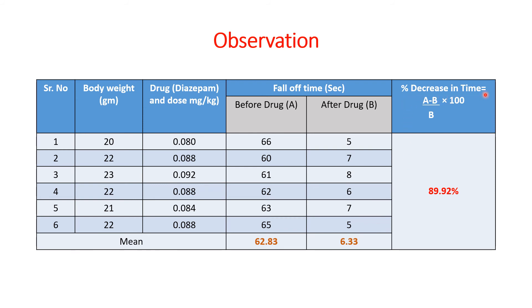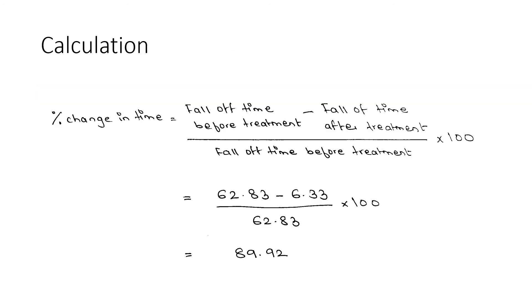We will calculate the mean and get the result as 6.33 seconds. Then we will calculate the percent decrease in time. The formula is A minus B divided by B times 100. 62.83 minus 6.33 divided by 62.83 times 100, and we get the result as 89.92 percent.